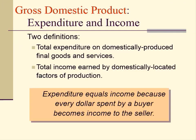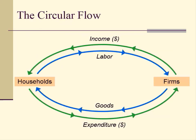Let's start with gross domestic product. You can define it as either one, total expenditure on domestically produced final goods and services, or two, total income earned by domestically located factors of production. The factors of production are land, labor, capital, human capital, and entrepreneurship. Expenditure equals income because every dollar spent by a buyer becomes income to the seller. This is well depicted by the circular flow diagram.